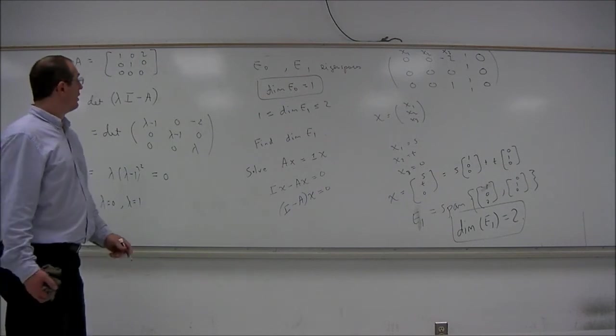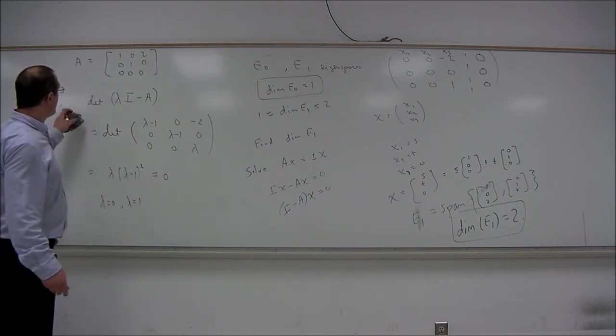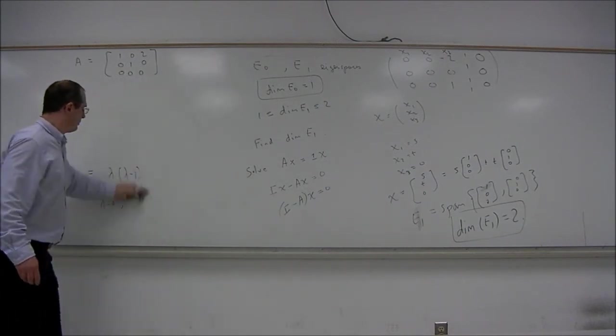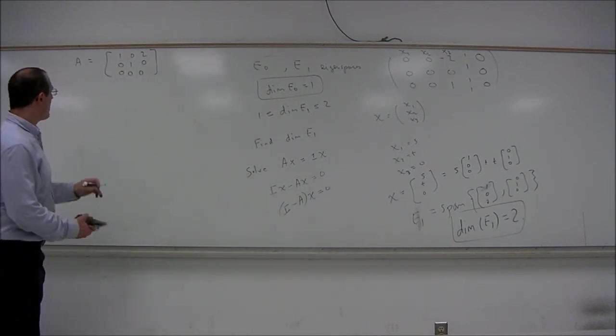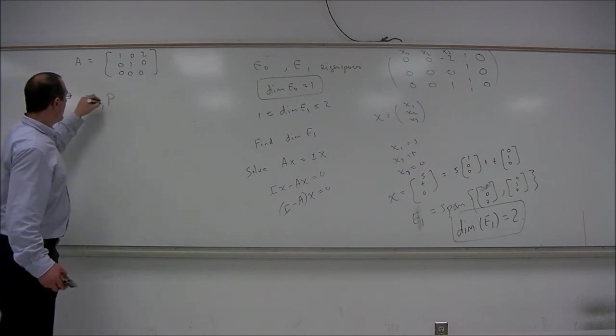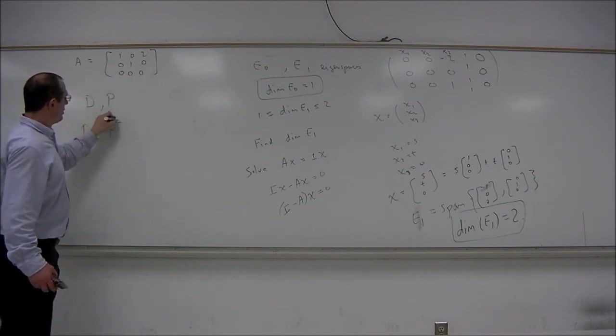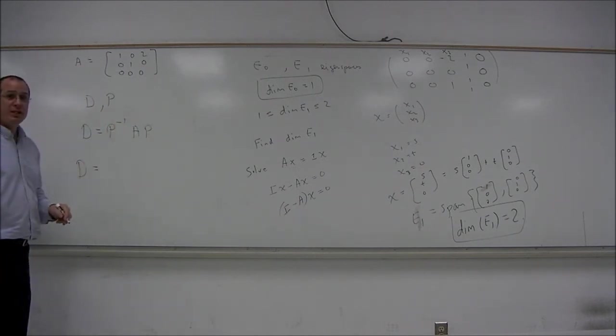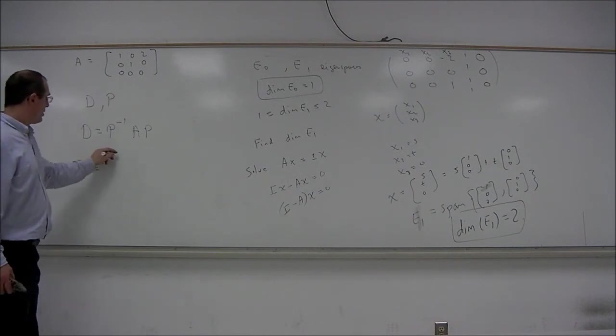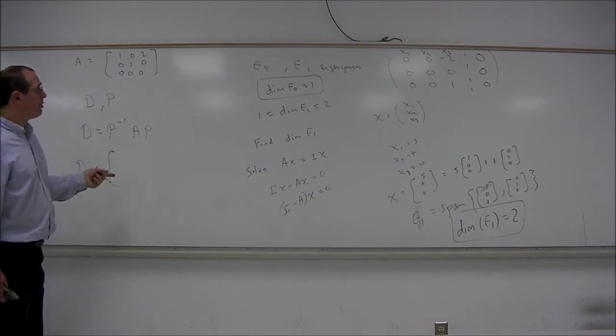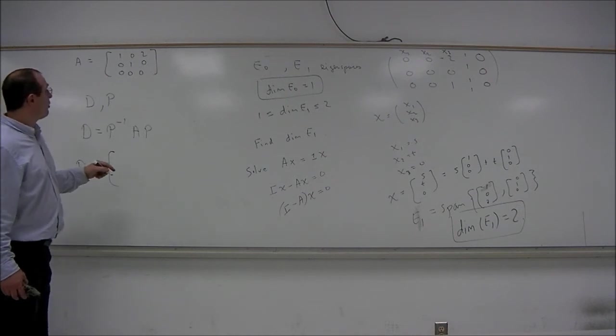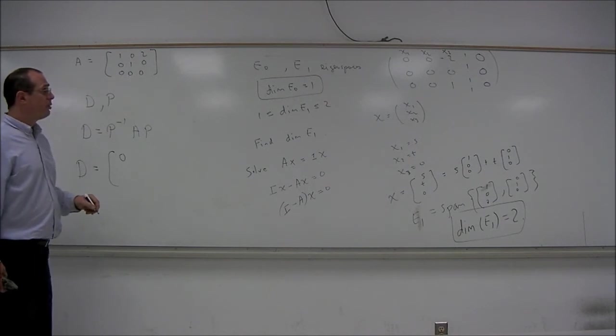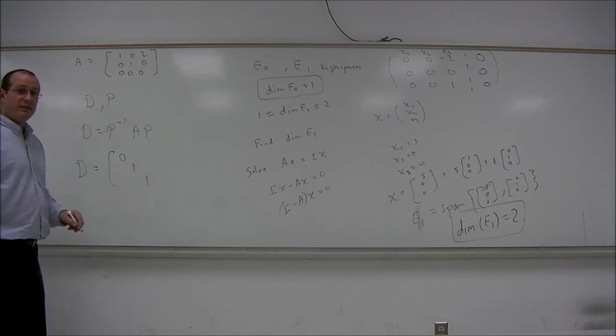So furthermore, we can say when a matrix is diagonalizable, we can do a little more than just declare that it is such. We can actually find the matrices D and P such that D is equal to P inverse AP. D will simply be the matrix of eigenvalues on the diagonal. So the eigenvalues were 0 and 1. 0 was an eigenvalue of multiplicity 1, and 1 was an eigenvalue of multiplicity 2.